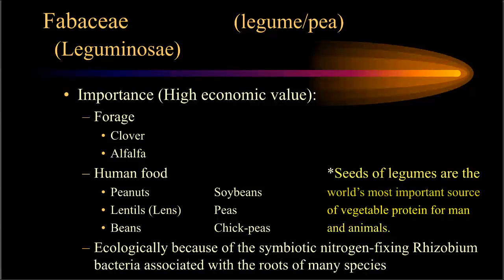Ecologically, legumes are important because of a symbiotic nitrogen-fixing Rhizobium bacteria that lives in nodules in the root system, extracting inert nitrogen from the atmosphere and fixing it into organic nitrogen compounds stored in the root. Because of this, legumes are involved in the nitrogen cycle of our ecosystem. In Texas, lightning storms deposit about 60 to 90 pounds of nitrogen per year through nitrate and nitrite in rainfall — nitrogen is the only element in the natural system that comes to the earth's surface via lightning thunderstorms.